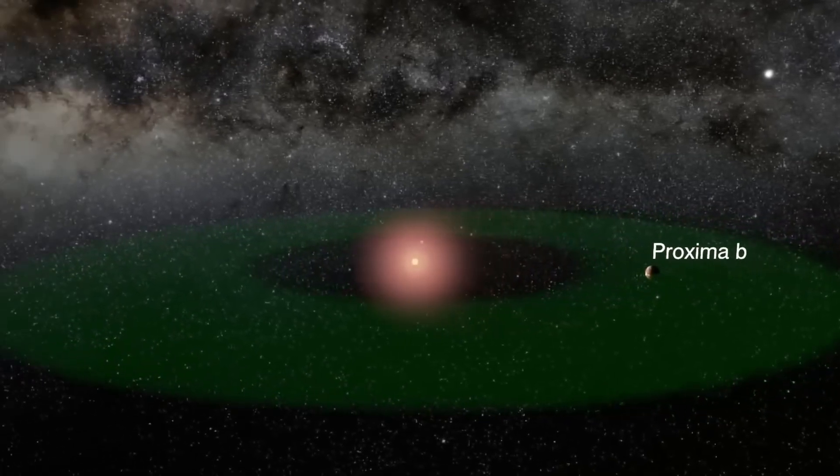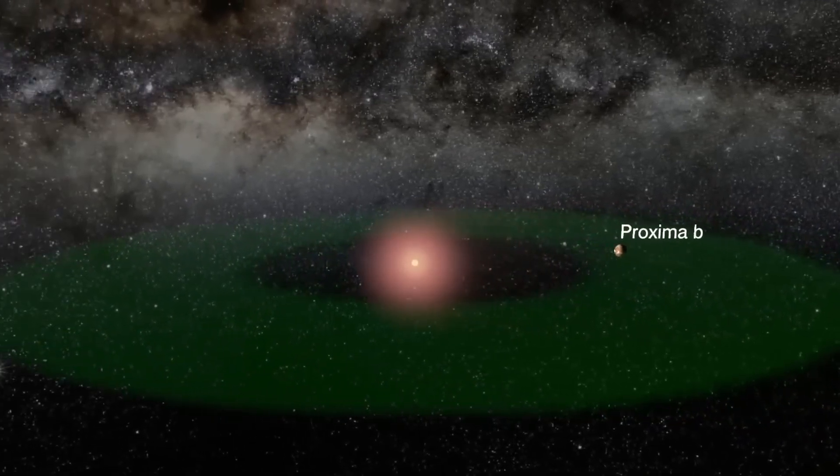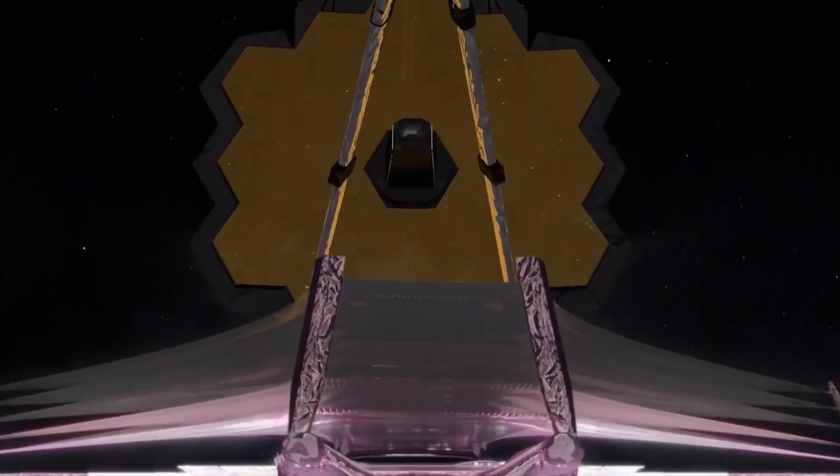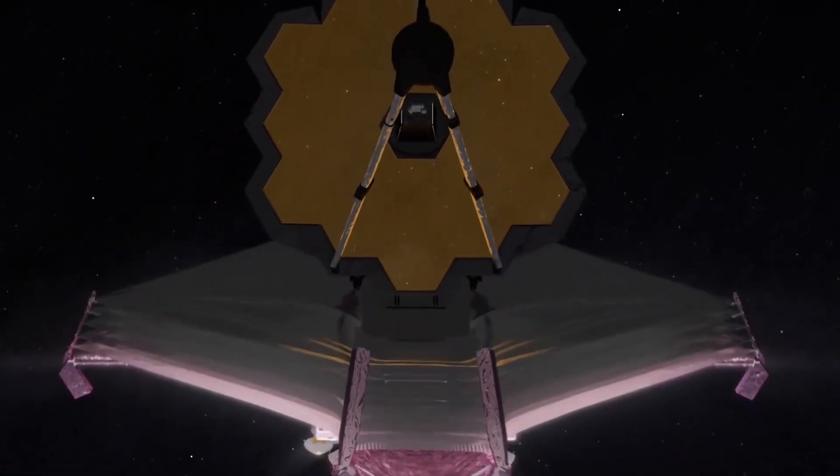Why are scientists focusing on Proxima b? What disturbing things might have been discovered about this planet, and how can the new James Webb telescope help us understand them better?